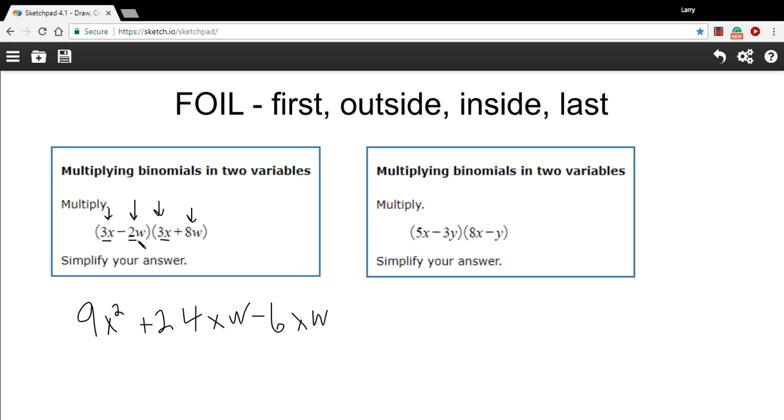And then finally, the last terms, negative 2w and a positive 8w. The negative 2 times 8 is a negative 16, and the w times the w is a w squared. All right, so now we do have some like terms we can combine here. A positive 24xw and a negative 6xw. So that's going to be an 18.